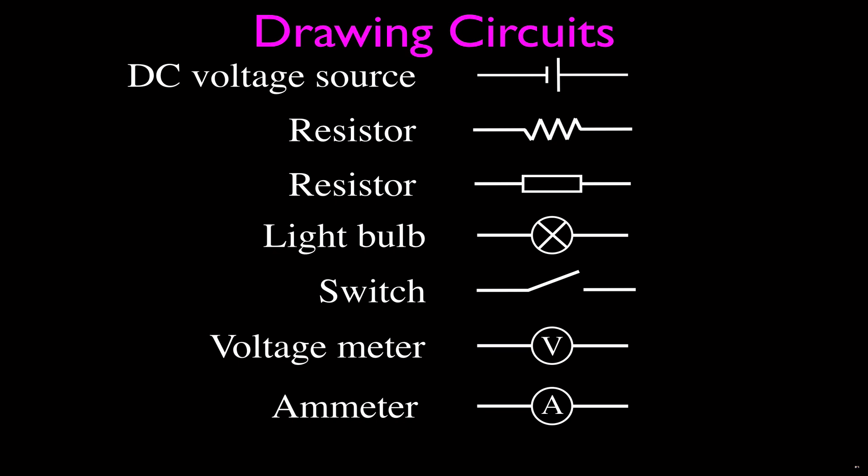So I think these are the most common circuit symbols that you'll see. We have one for a DC voltage source, which we have here. This is the DC voltage source, like a battery, direct current voltage source. One line is longer and one line is shorter. If you have two lines of the same length, then that's a capacitor.